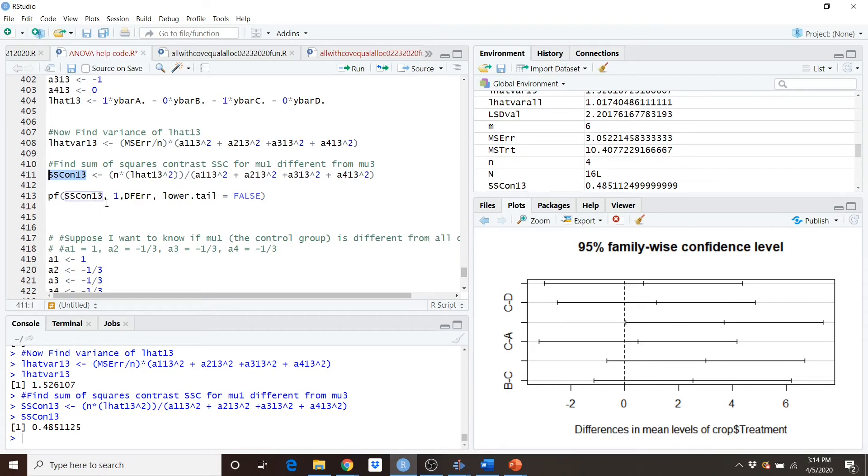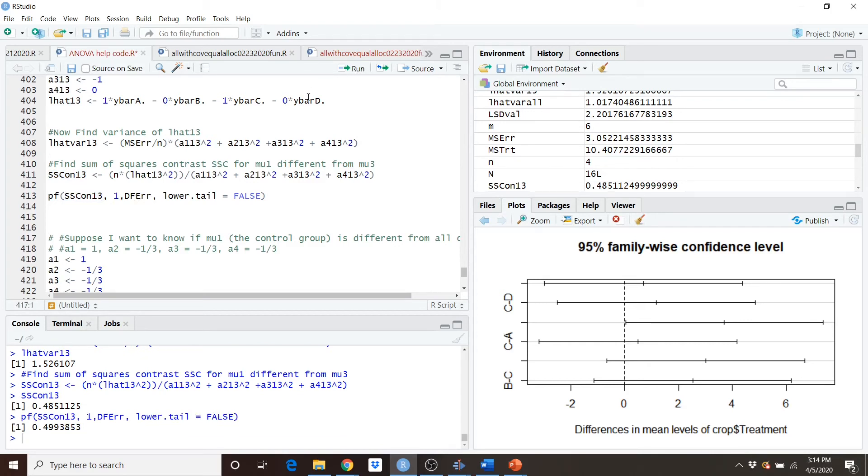Now I'd like to test to see if this is significant. So I'm going to use my f and I'm going to look at the probability that this f is greater than the f I would expect with one numerator degree of freedom and degrees of freedom error in the denominator. And what I find is that I get a p value of 0.4993853. This is an insignificant contrast.